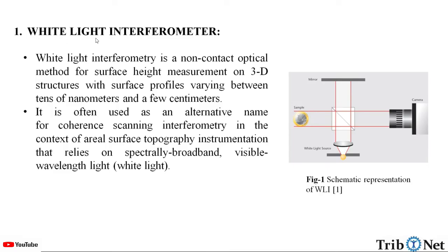White Light Interferometry is a non-contact optical method for surface height measurement on 3D structures with surface profiles varying between tens of nanometers and a few centimeters. It is often used as an alternative name for coherent scanning interferometry in the context of aerial surface topography instrumentation that relies on spectrally broadband visible wavelength light — that is, the white light.